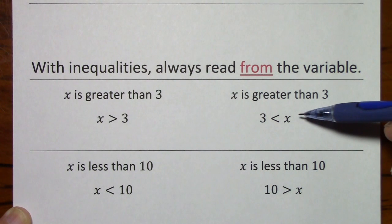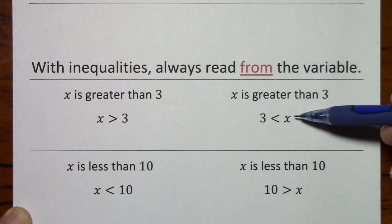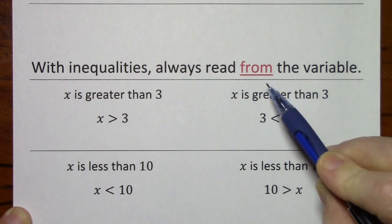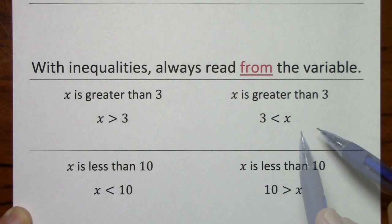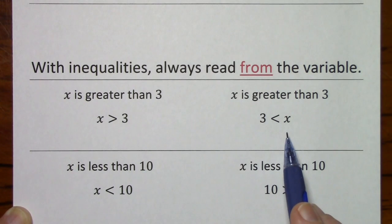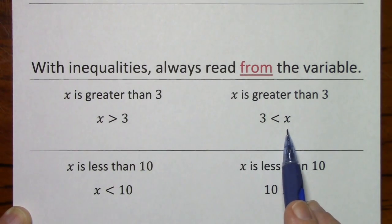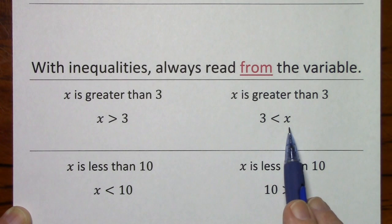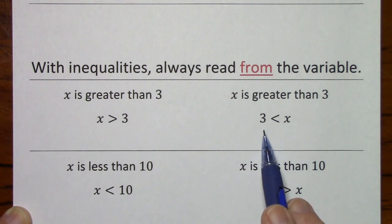But if you're working with algebraic inequalities where there's a variable involved, it's important to read from the variable. This is because it's the values of x with which we are concerned, and if you read it from the variable, you know that x can be any value that is greater than 3.